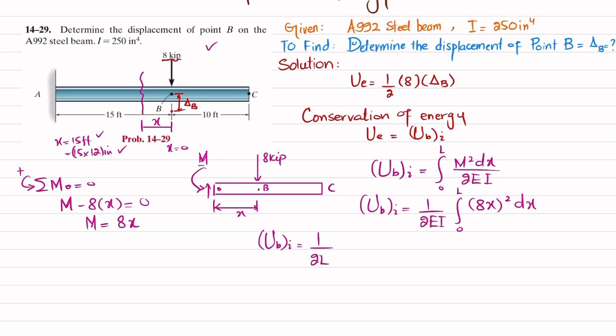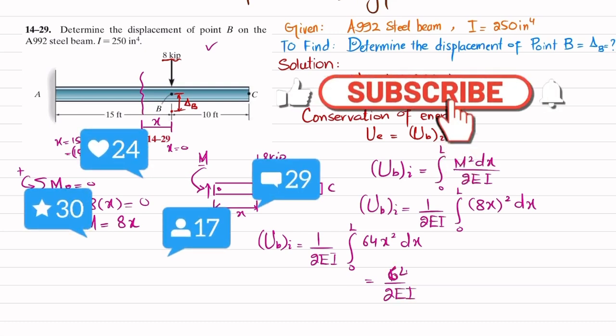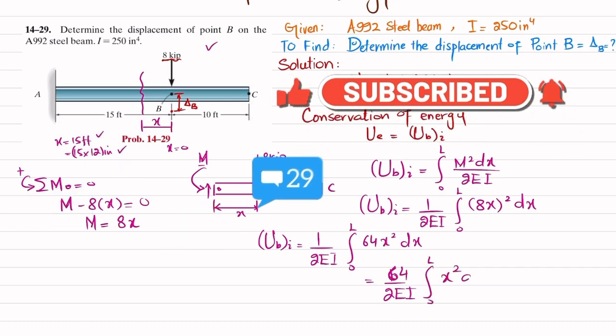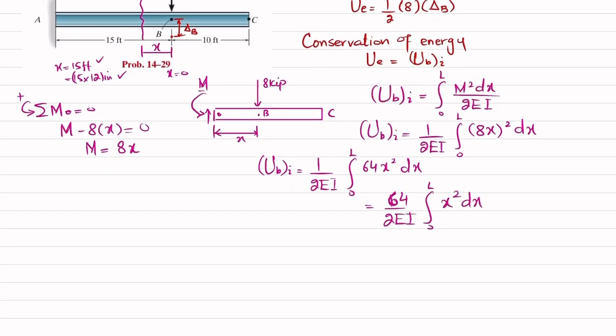This is 64x squared into dx. If you further simplify, it will be 1 over 2EI, and 64 will come out, so we're left with 0 to L, x squared dx. That will be 32 over EI.